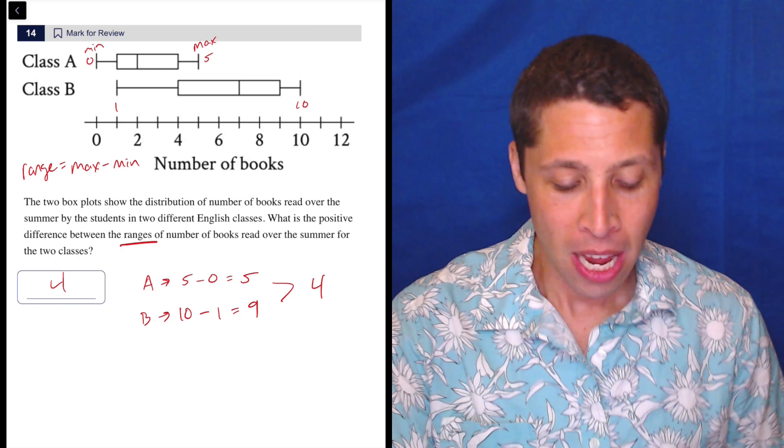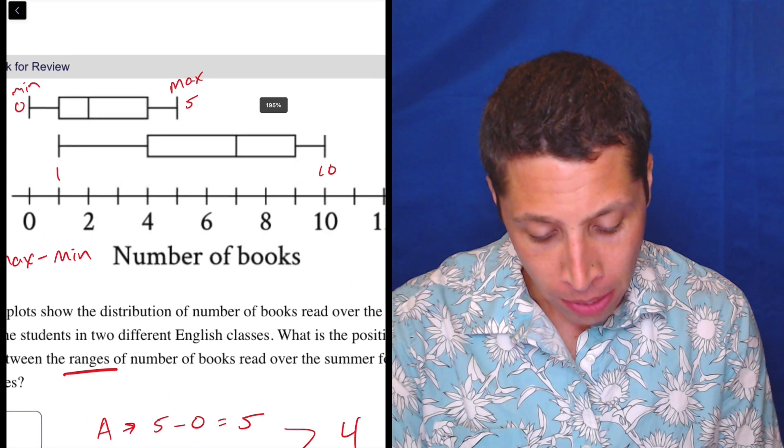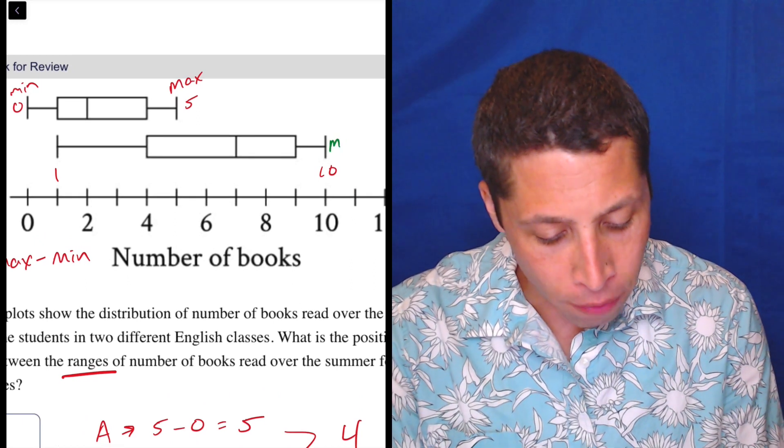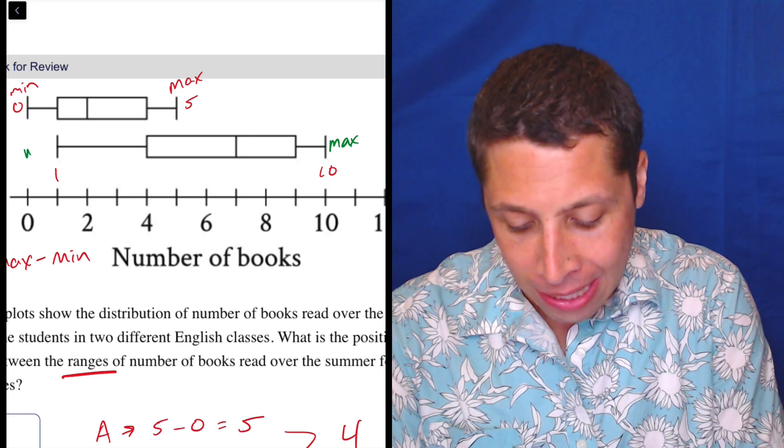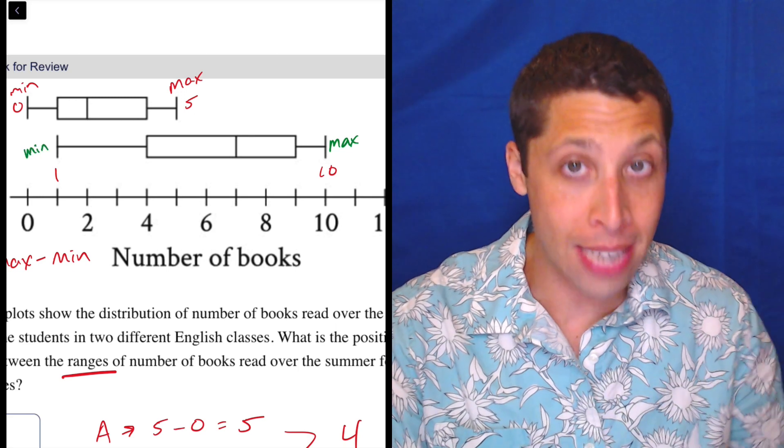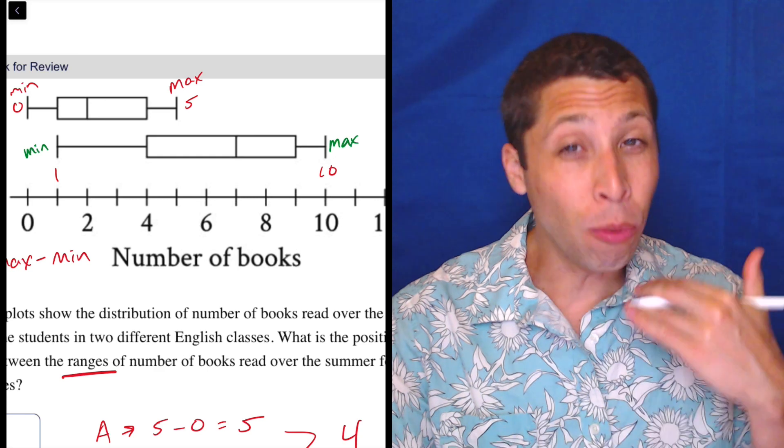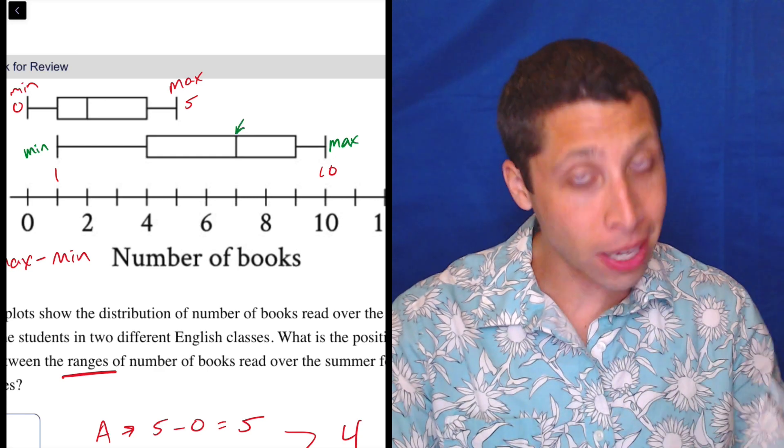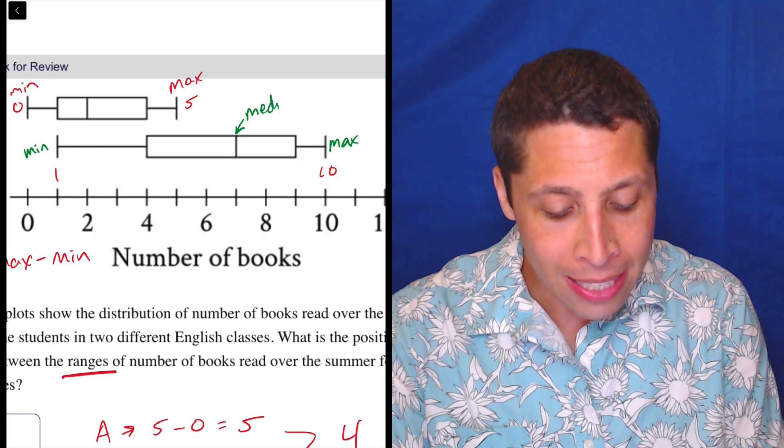So let's talk about what they mean. I'm gonna zoom in on class B here and just do a little quick review of what a box plot is. So like I said, the end of the whiskers represent the maximum and minimum values in a data set.